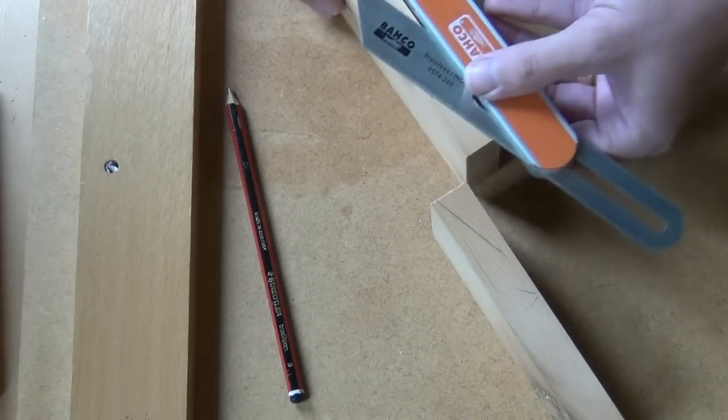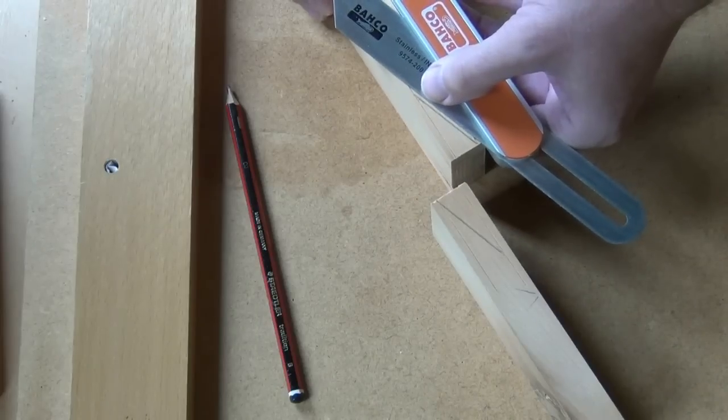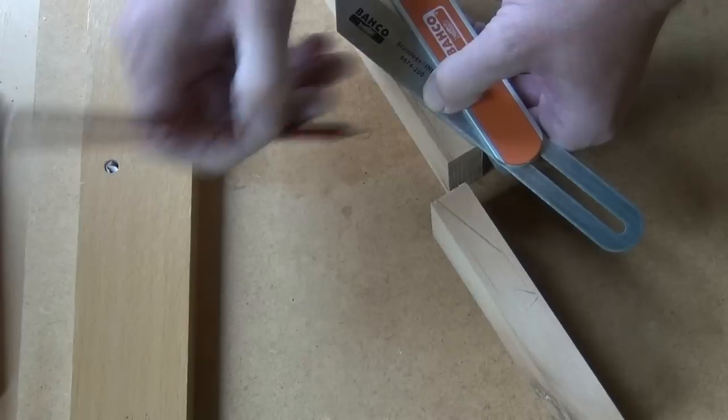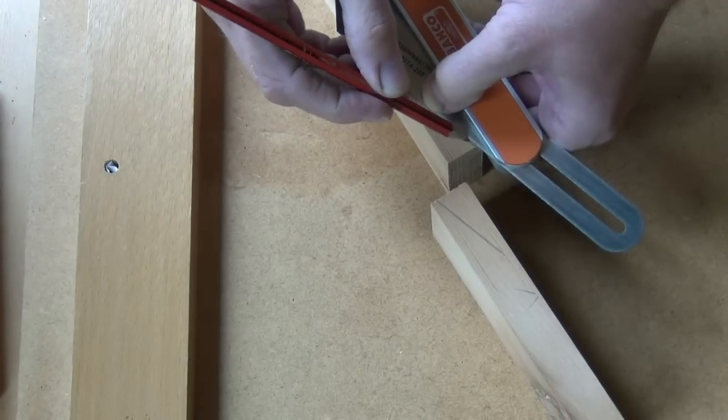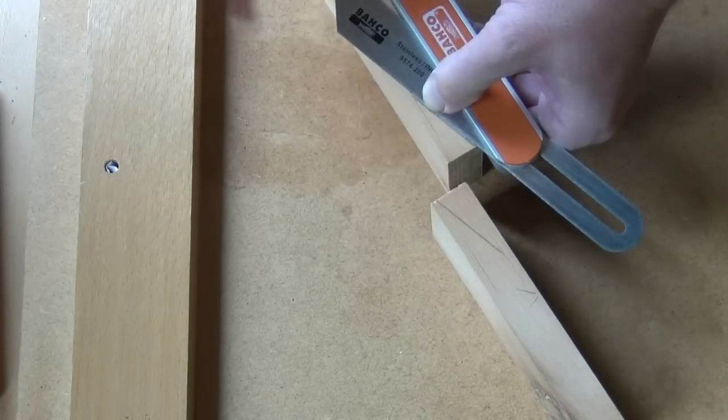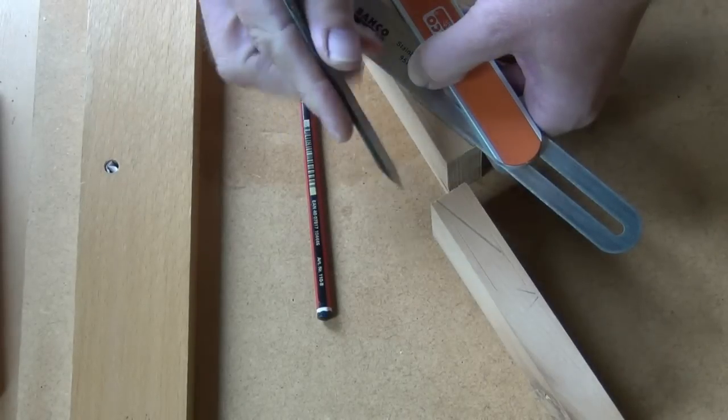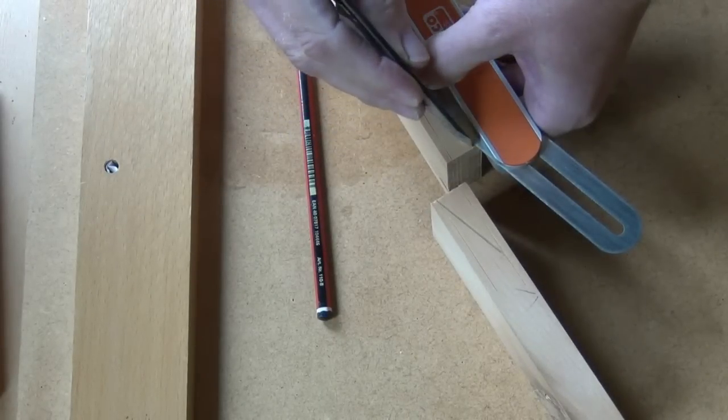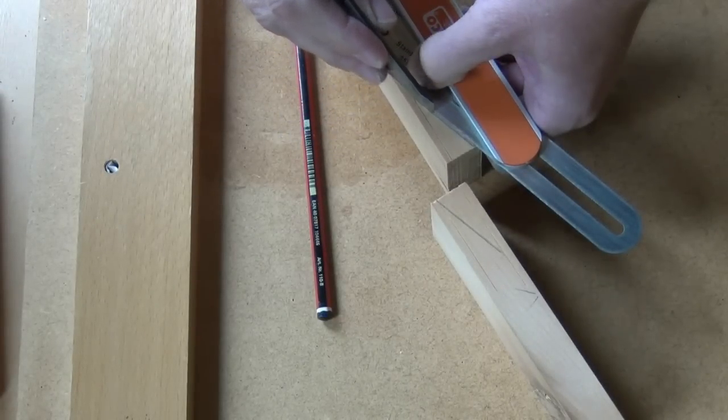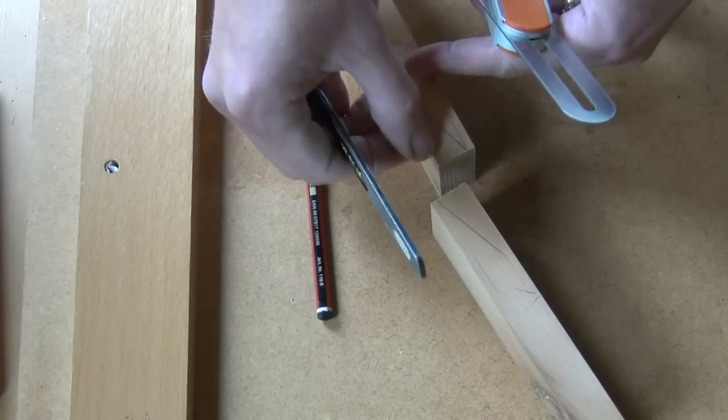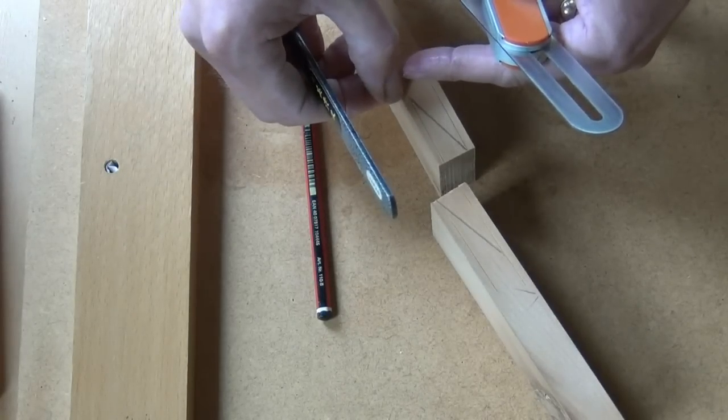Set the bevel gauge on the end of the step mark, pencil and I've scribed that line as well. So knife that line just up to where the other step, where we mark with the marking gauge the other width of the step.